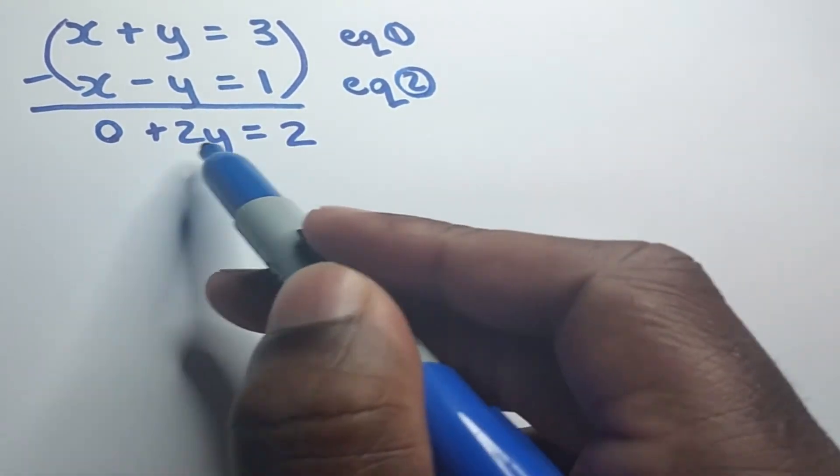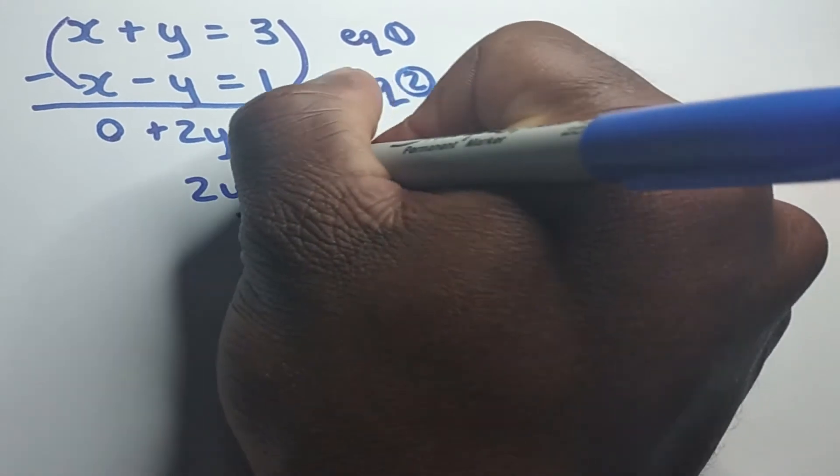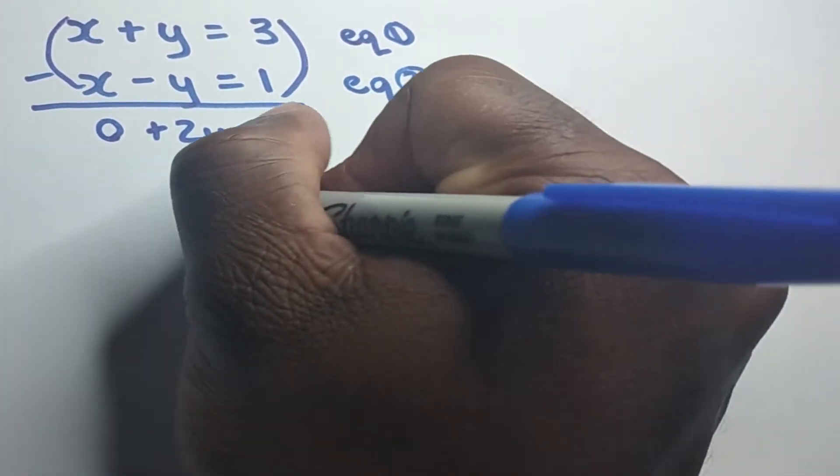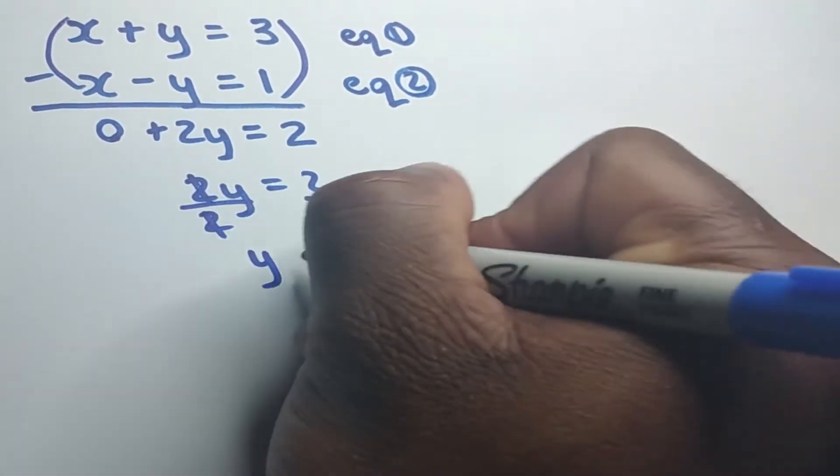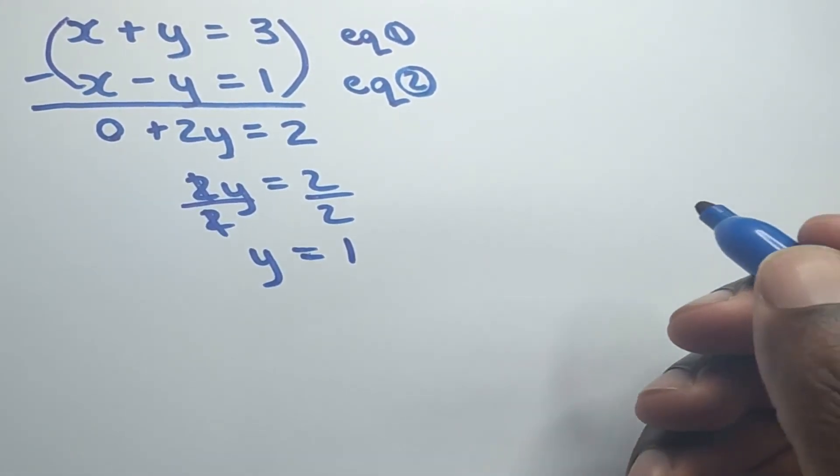And we can now simply transpose this for y. So this is the same thing as 2y is equal to 2. And what we can do now is to simply divide both sides by 2, and 2 will cancel 2 here. We'll be left with y is equal to 1. So 2 divided by 2, that's 1.